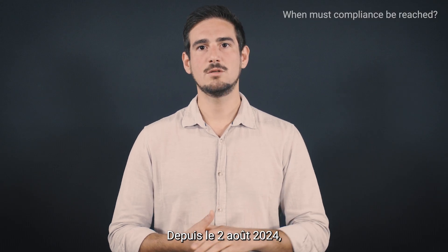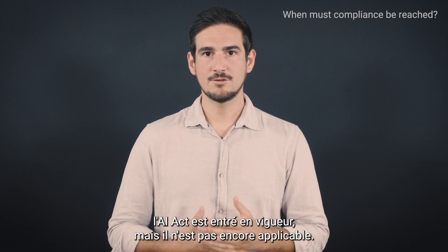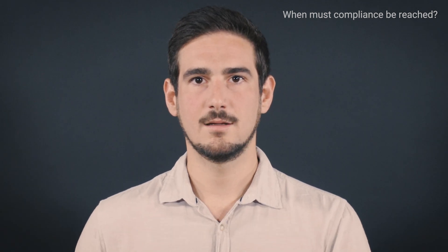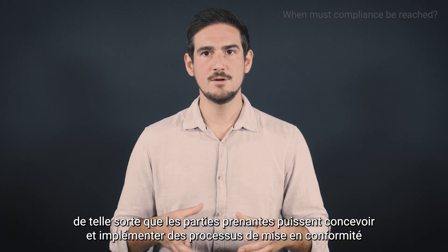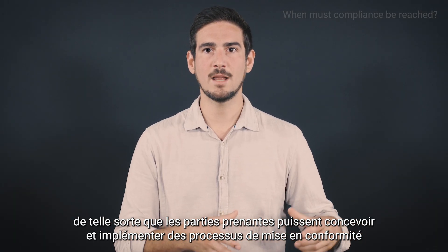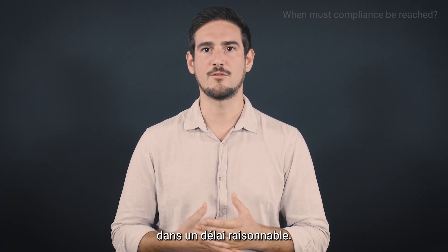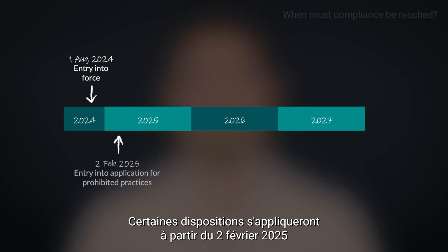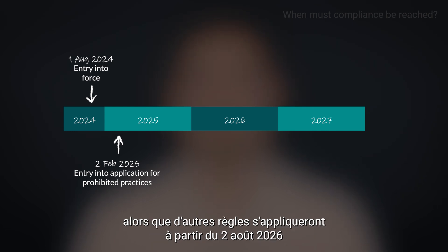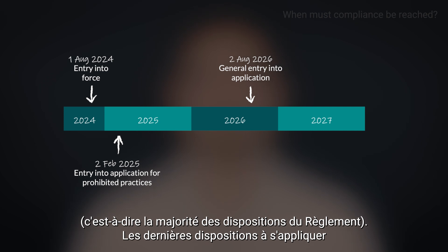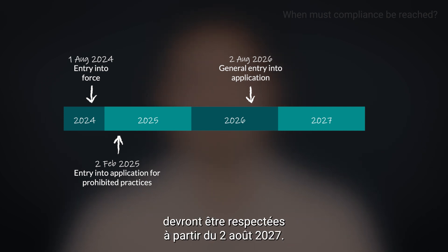Since August 2nd, 2024, the AI Act entered into force, but it is not applicable yet. Its provisions will start to apply in a differentiated manner, so that stakeholders can design and implement compliance processes in a reasonable time frame. Some will be applicable from February 2nd, 2025, for instance the rules on forbidden AI practices, whereas other rules will apply from August 2nd, 2026 — that is to say, most of the provisions of the regulation. The last provisions to apply will have to be complied with from August 2nd, 2027.